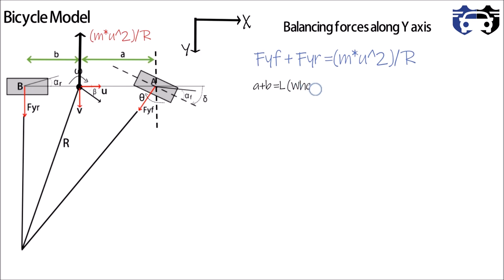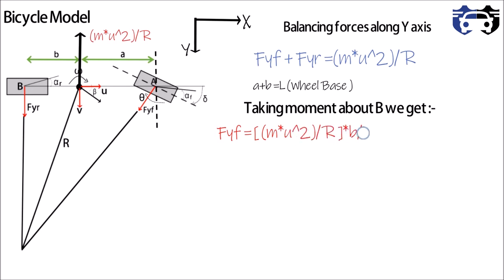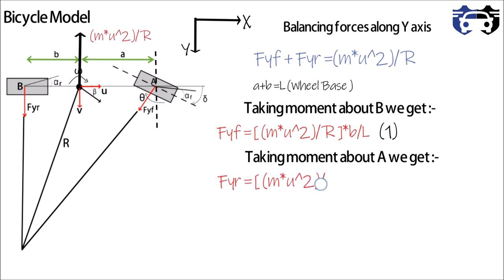a + b = L, that's the wheelbase of your car. Now I'm going to take moment about B. We get Fyf = (m*u^2/R)*(b/L). This is our equation 1. And on taking moment about A we get Fyr = (m*u^2/R)*(a/L). This is our equation 2.